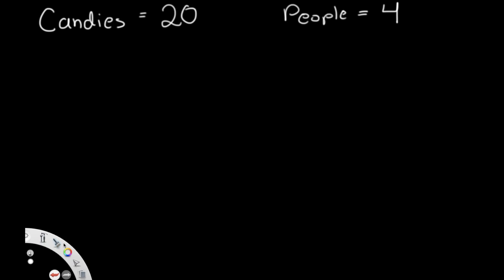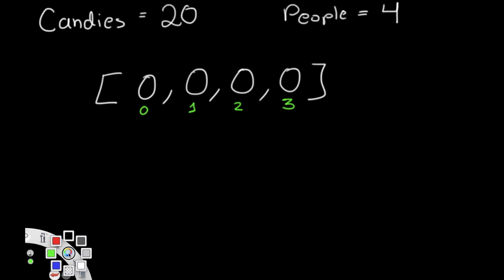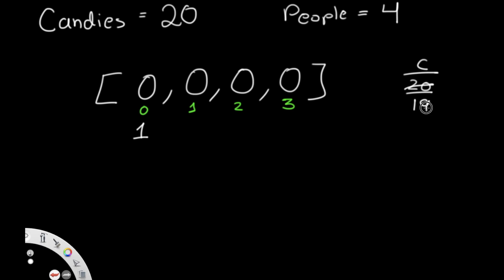Let's use a custom example: 20 candies and four people. Our output array has length four, so we start with [0, 0, 0, 0] at indices zero through three. We start with 20 candies. First, we give one candy to index zero: zero plus one equals one, leaving 19 candies. Then we give two candies to index one: zero plus two equals two, leaving 17 candies.